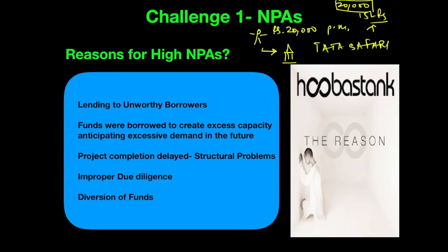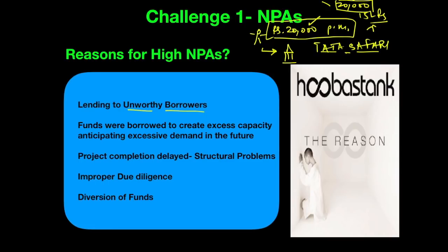The EMI of this car equals whatever this person earns in his entire month. He becomes a subprime borrower because there is no possibility that he will be able to repay his loans — when he buys this car his EMI is Rs. 20,000 and all he earns is Rs. 20,000. There is no other method to earn extra money. After some time he is going to default, and therefore this is a case of lending to unworthy borrowers.